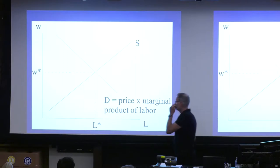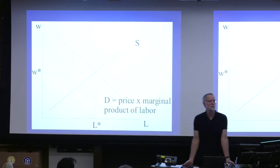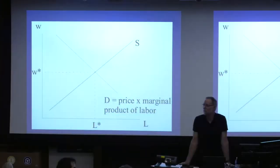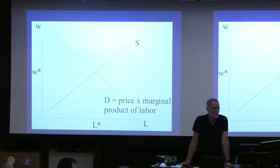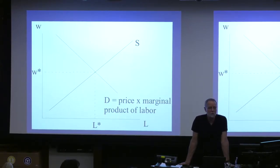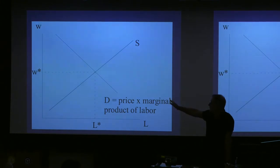In the market, we see a demand curve for labor. It's downward sloping — the more workers you hire, the lower the output that each successive one adds. That's roughly speaking the law of diminishing returns. We multiply the number of units of output that the worker adds by the price of the output, net of any materials cost, and that's the value of the worker's marginal product. That's the demand curve for labor.